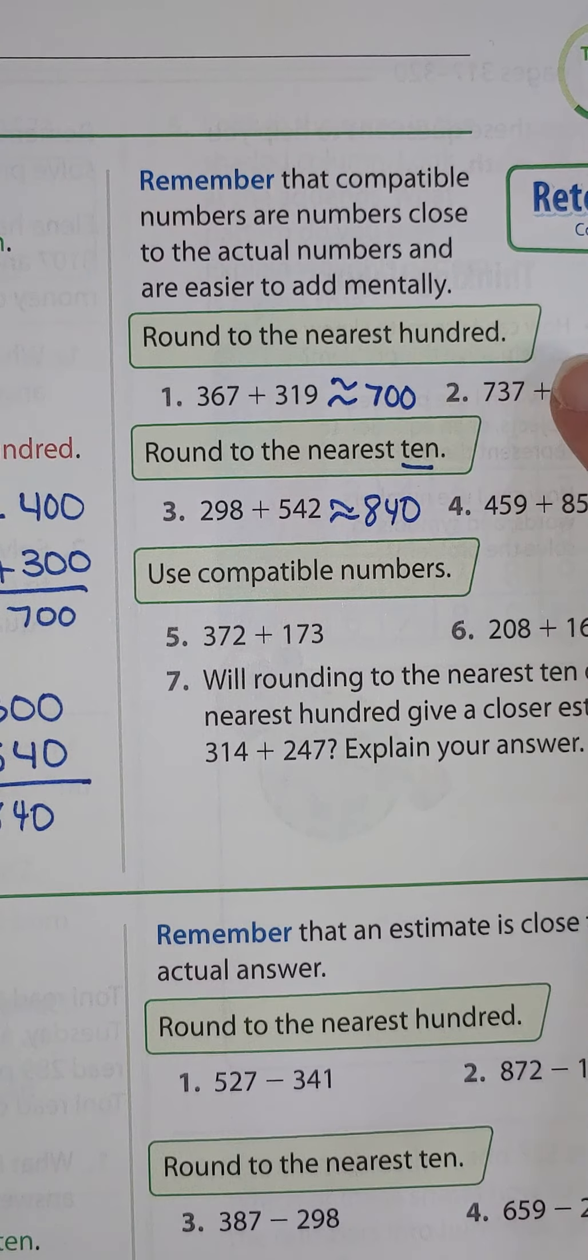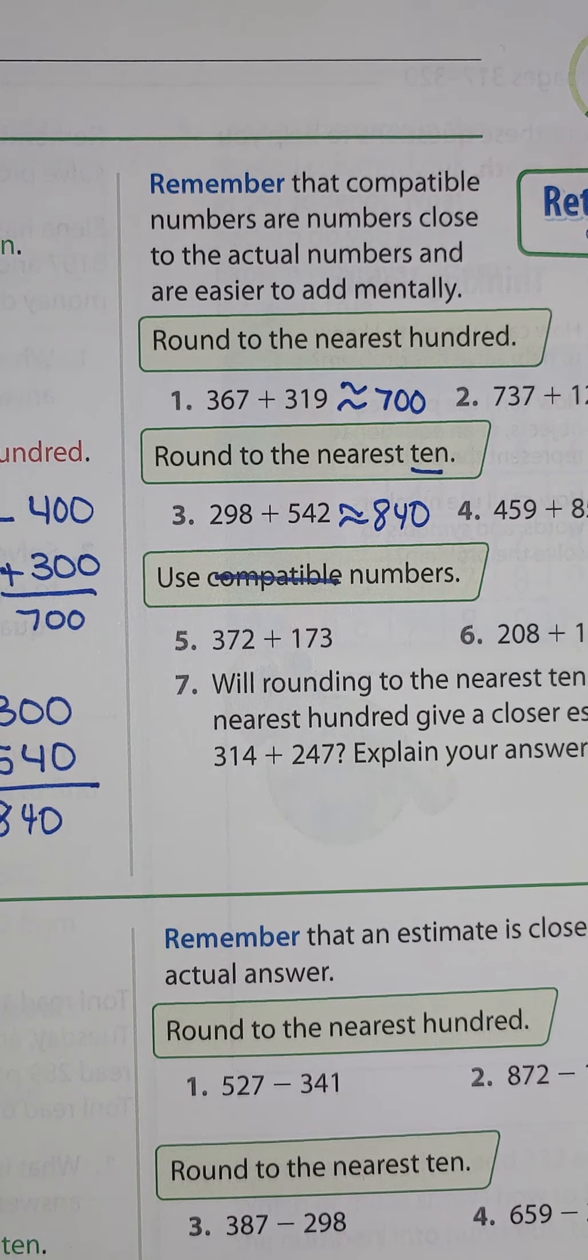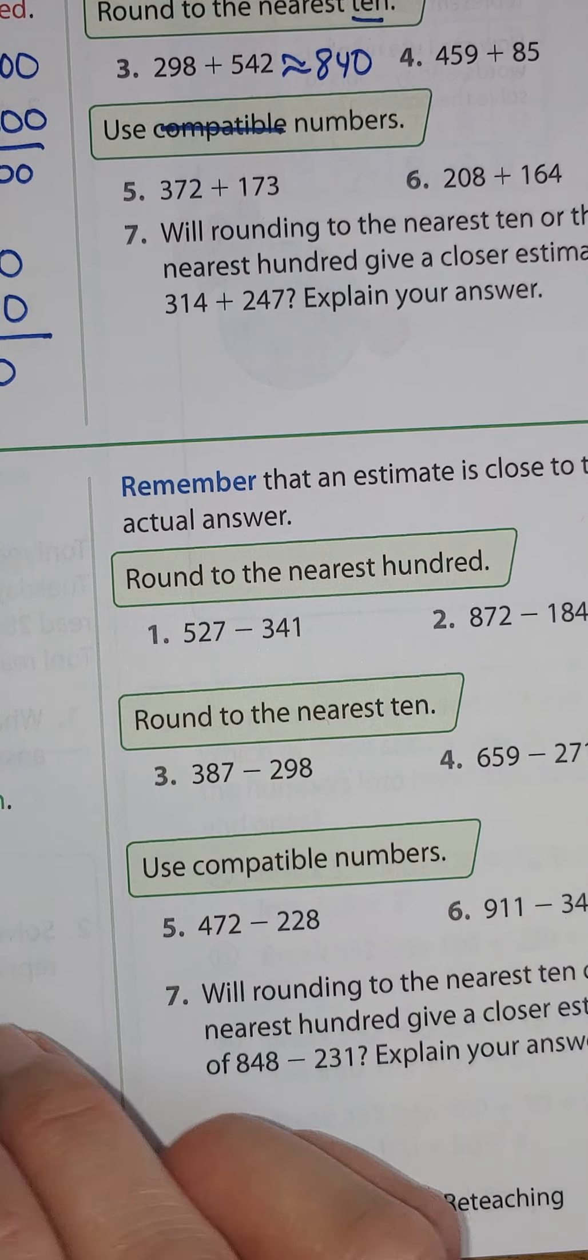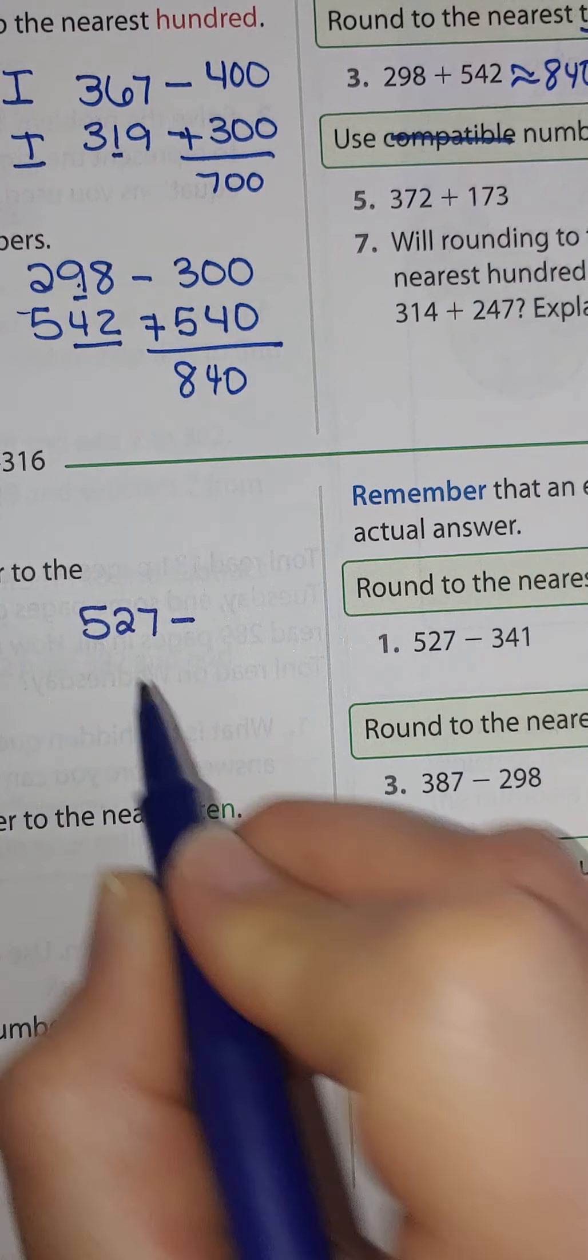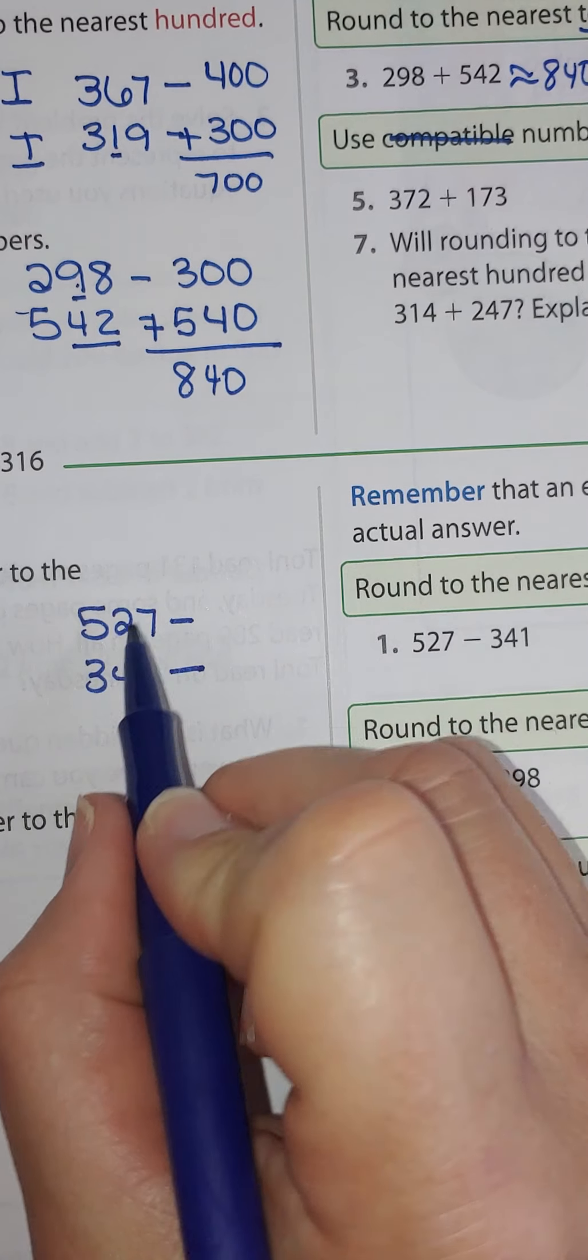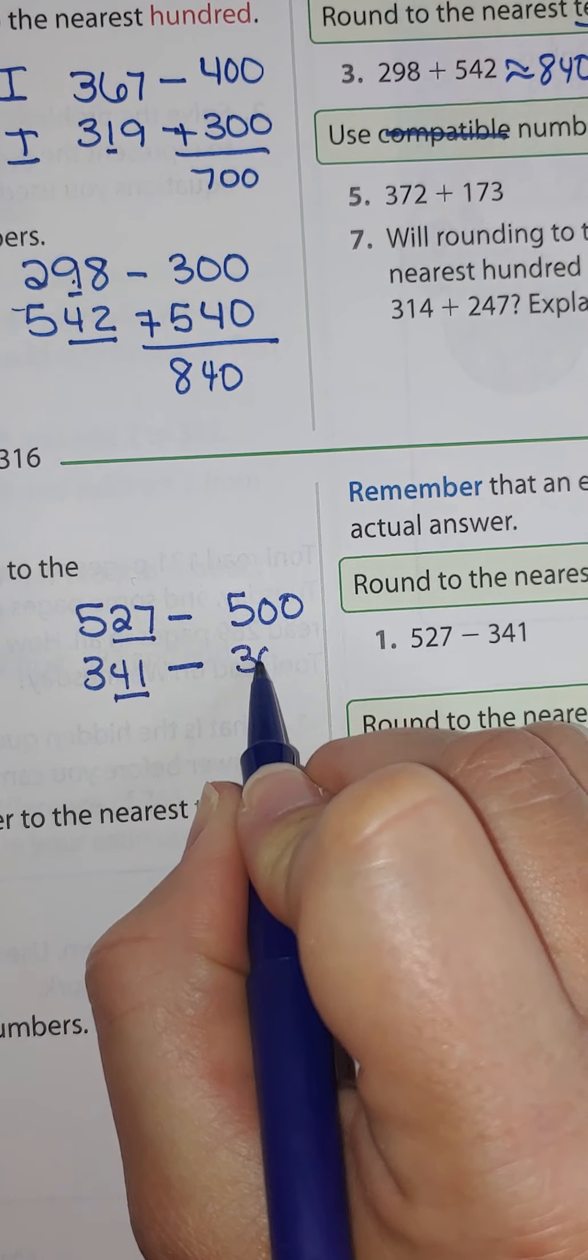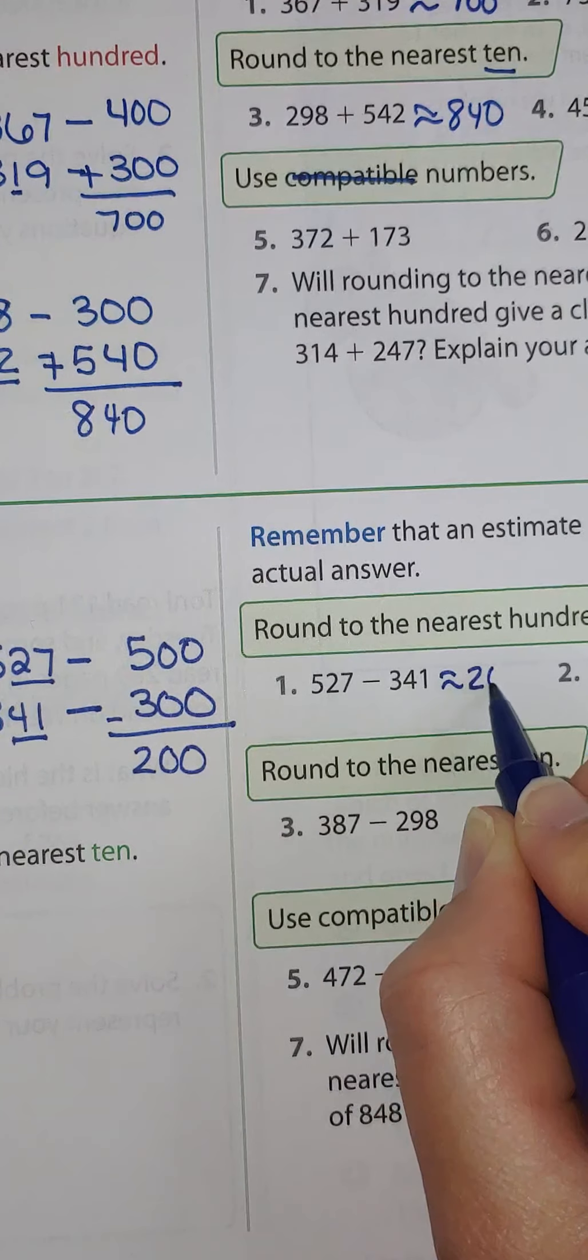If you'd like to continue to practice, do 2, 4, 6 as you go down. You do not have to use compatible numbers. All right, let's go to the bottom here and let's talk about our estimating with differences. So again, I'm going to work over off to the side here. We're going to do number 1. So I have 527 and 341. Let's round to the hundreds place. 27 is pretty low. So this is going to round to 500. 41 is below 50. So this is going to round to 300. Now I'm ready to subtract and I get an estimate of 200.